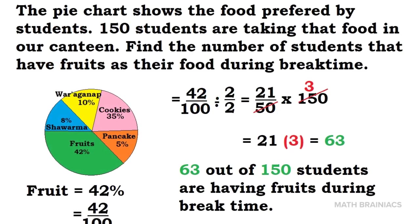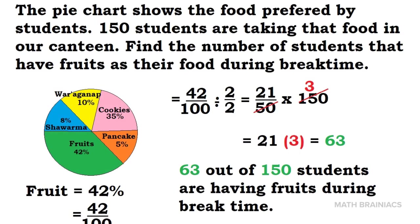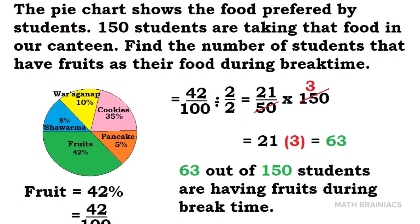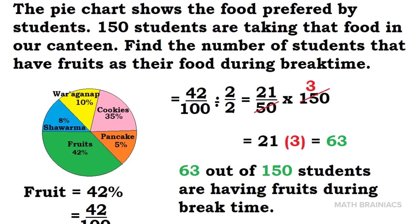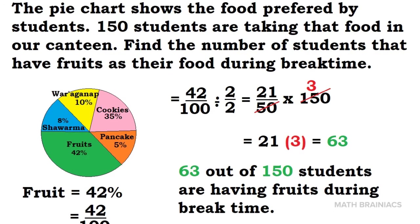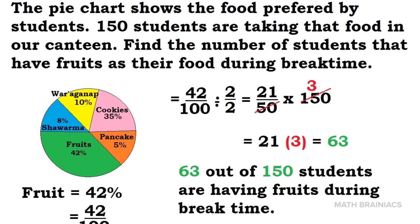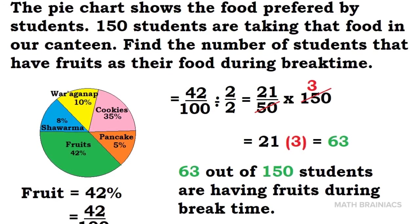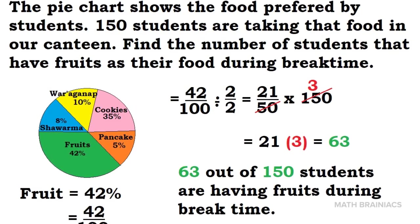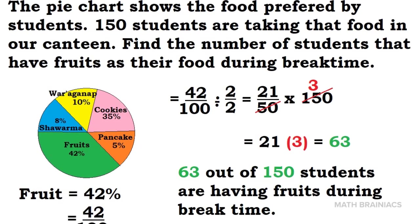To wrap it up in finding the percent of a number, convert the percent into fraction. If the fraction is not yet in the simplest form, look for the common factor of the numerator and denominator and divide both numerator and denominator by the common factor. After finding the simplest form of the fraction, multiply it with a given number.